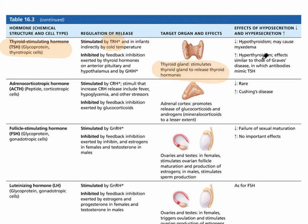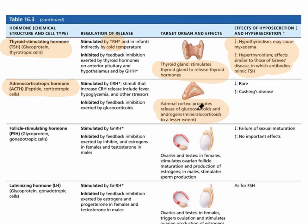The thyroid gland responds to TSH and releases thyroid hormones. A lack of thyroid hormone is hypothyroidism, called myxedema; excess is hyperthyroidism, one form of which is Graves' disease. Next is ACTH — adrenocorticotropic hormone — whose target gland is the adrenal cortex. It promotes the release of various hormones based on the layer of the adrenal cortex, and too much leads to Cushing's disease.